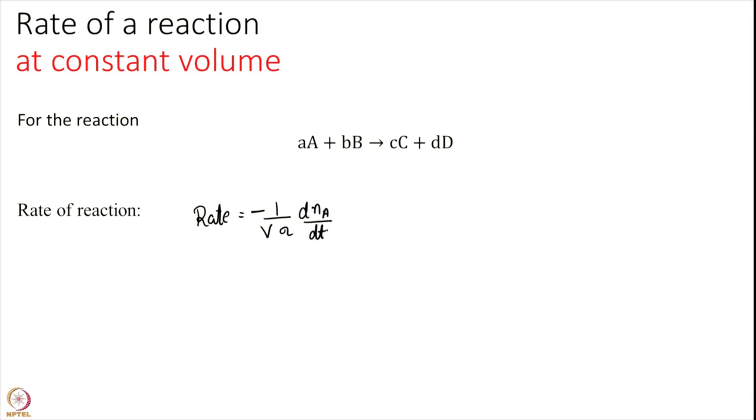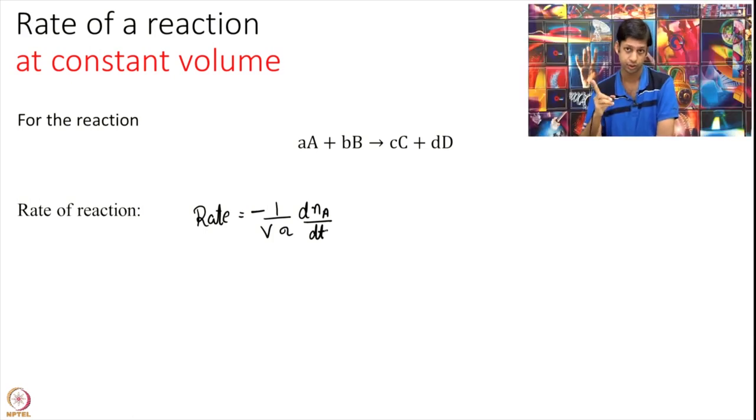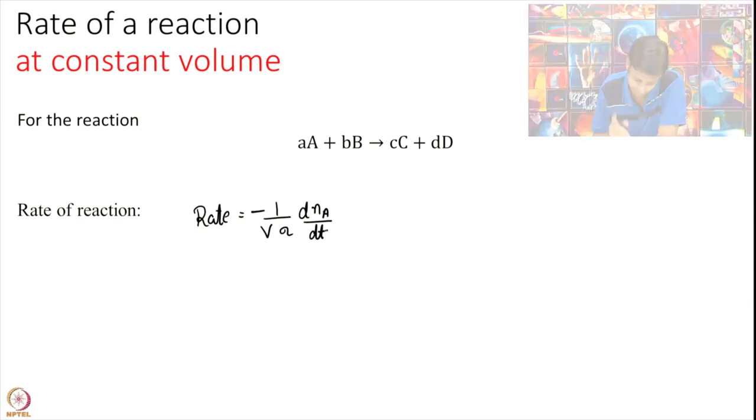So this rate that I have got 1 over volume into a minus sign d N A over d T. If volume is constant, there is a big if and in chemistry we often deal with such reactions in solutions. So when you mix 2 reagents typically the volume is not changing by a lot.